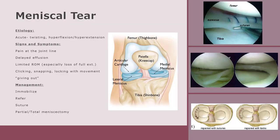Meniscal tears. A meniscus tear is usually caused by twisting or turning quickly, often with the foot planted while the knee is bent. Meniscus tears can occur when lifting something heavy or playing sports. As you age, the meniscus gets worn, making it easier to tear. Signs and symptoms include pain at the joint line, delayed effusion, limited range of motion — especially loss of full extension — clicking, snapping, or locking with movement, feeling like the knee is giving out, and what is called movie theater sign, which is pain in the knee after prolonged periods of sitting.